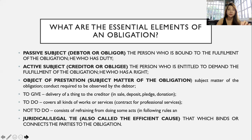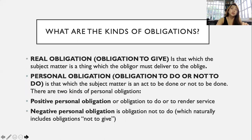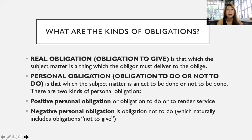What are the kinds of obligations? We have real obligations and personal obligations. Under personal obligations, there are positive and negative personal obligations. A real obligation is an obligation to give — the subject matter is a thing which the obliger must deliver to the obligee; it can be determinate or indeterminate. A personal obligation is an obligation to do or not to do — the subject matter is an act to be done or not done. Specifically, a positive personal obligation is an obligation to do or to render service, while a negative personal obligation is an obligation not to do, which naturally includes obligations not to give.